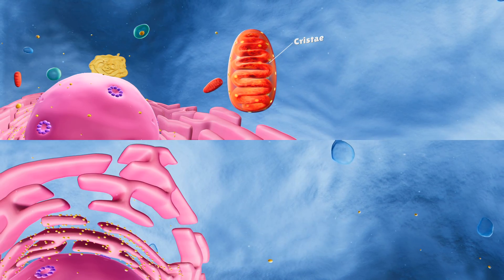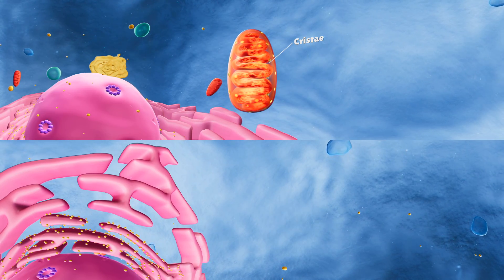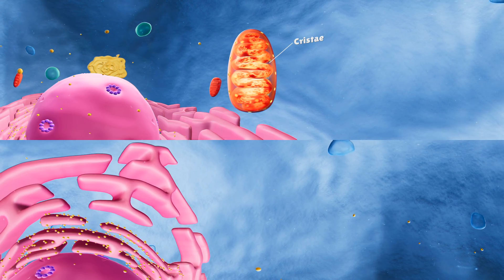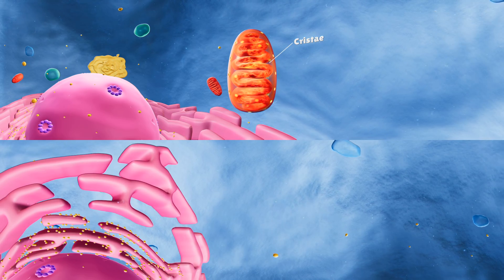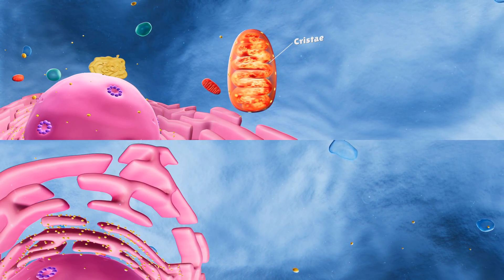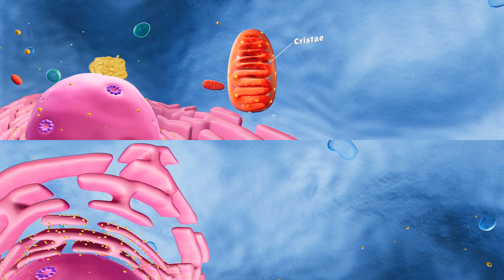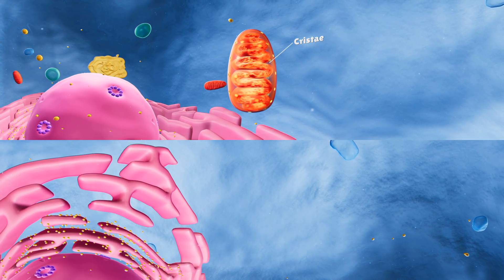ATP is also known as adenosine triphosphate. ATP is like electricity. It provides energy to the cell. Obviously, the cell wants as much energy as possible, so the inner membrane is very big.